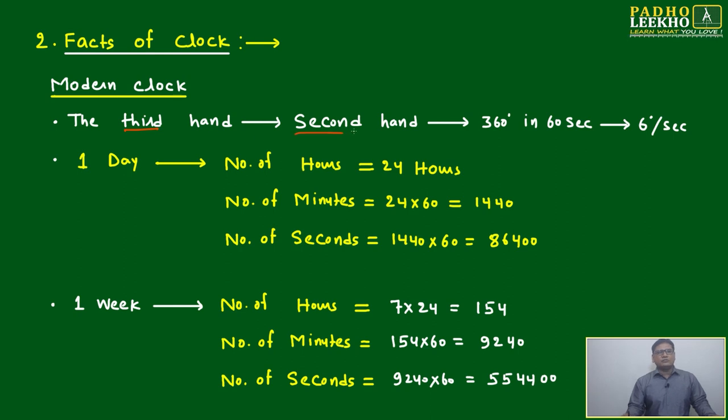Modern clocks use the third hand, also called the second hand, which runs very fast - 360 degrees in 60 seconds, that is 6 degrees per second. But mathematically, it is not going to help much because we cannot calculate seconds.